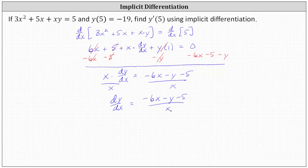And now we can find y prime of five, but notice y prime of five is the same as dy dx at x equals five. But notice to evaluate dy dx, we need both an x and a y value, which is why they told us y of five equals negative 19. So we can say that y prime of five is really equal to dy dx evaluated at the point five comma negative 19.